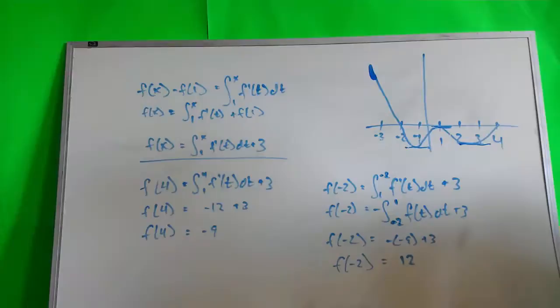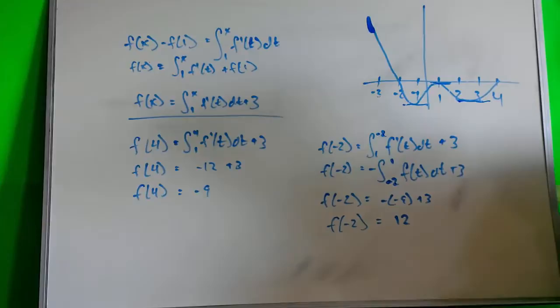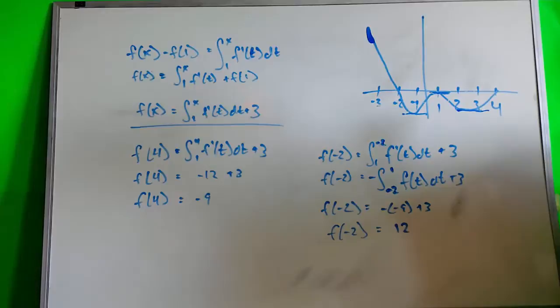Given that f of 1 is 3, write an expression for f of x that involves the integral. Find f of 4 and f of negative 2. All right, so given the fundamental theorem of calculus here, we got f of x minus f of 1 equals the integral from 1 to x of f prime of t dt.